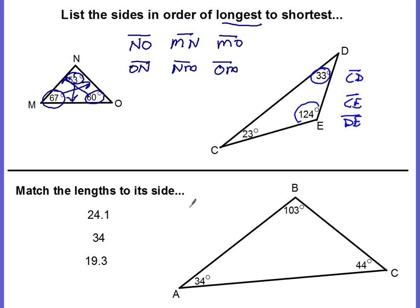Now we're going to match the lengths to its side — we're going to write the lengths on the model. The largest is 103 degrees, that's the largest angle. The side opposite angle B is side AC, so you write the length on the side itself — not next to the letters, not by an angle, but on the side. The longest side is not 24.1, it's actually 34, so 34 goes on side AC.